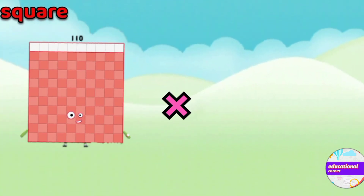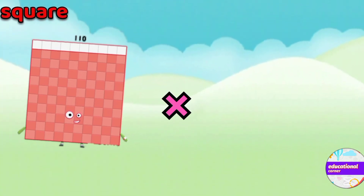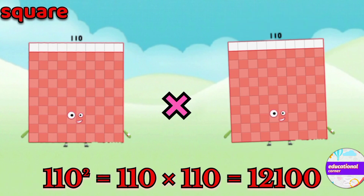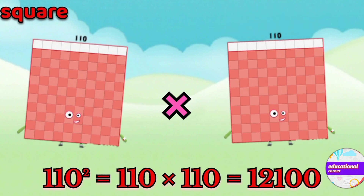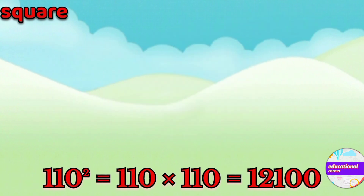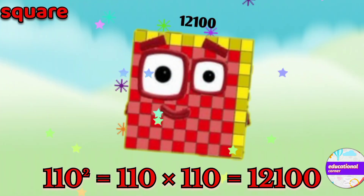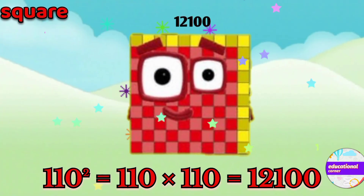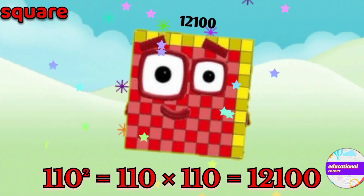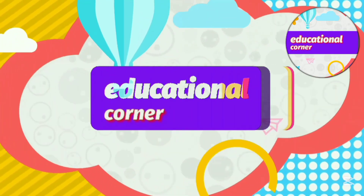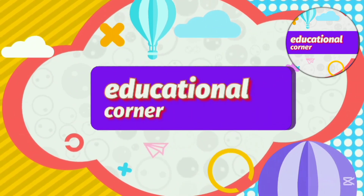110 multiply by 110, so the square of 110 is twelve thousand one hundred. Hope you like the video, bye!